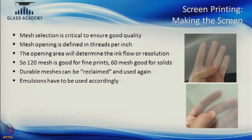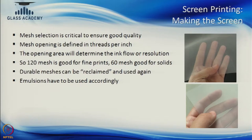When we start the screen printing process, we have to select the mesh. The mesh selection will depend on the pattern that you are going to print. Certain patterns will have a very fine print and there would be others which have large solid areas where a lot of ink needs to be transferred. Based on the design pattern you have to select the mesh. The mesh can be measured in lines per inch, which is essentially how many threads are going in an inch and which will determine the resolution of the print.